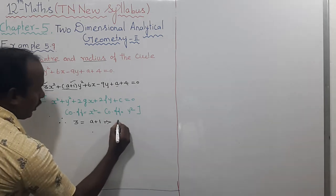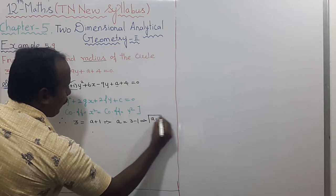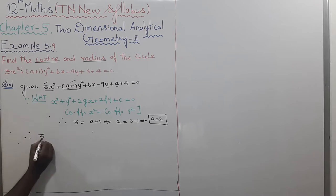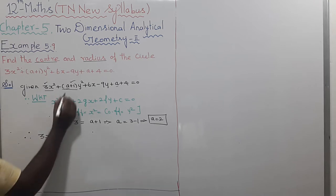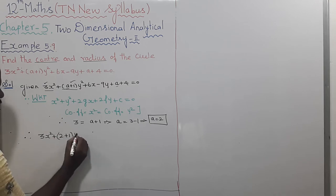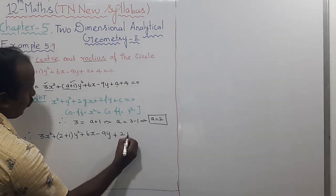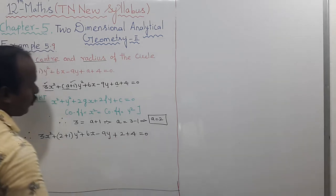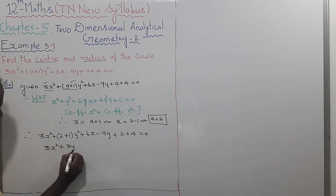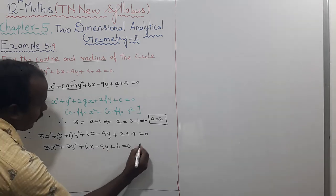To find the value of a: a = 3 - 1, which gives a = 2. Now substituting a = 2 into the given equation: 3x² + (2+1)y² + 6x - 9y + 2 + 4 = 0, which simplifies to 3x² + 3y² + 6x - 9y + 6 = 0.